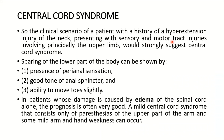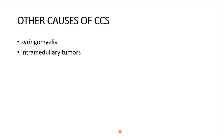The clinical scenario of a patient with a history of hyperextension injury of the neck presenting with sensory and motor tract injuries involving principally the upper limbs would strongly suggest central cord syndrome. Sacral sparing can be demonstrated by the presence of perianal sensation, good tone of the anal sphincter, and the ability to move the toes slightly. In patients whose damage is caused by edema of the spinal cord alone, the prognosis is often very good; a mild central cord syndrome consisting only of paresthesia of the upper body and some mild arm and hand weakness can occur.